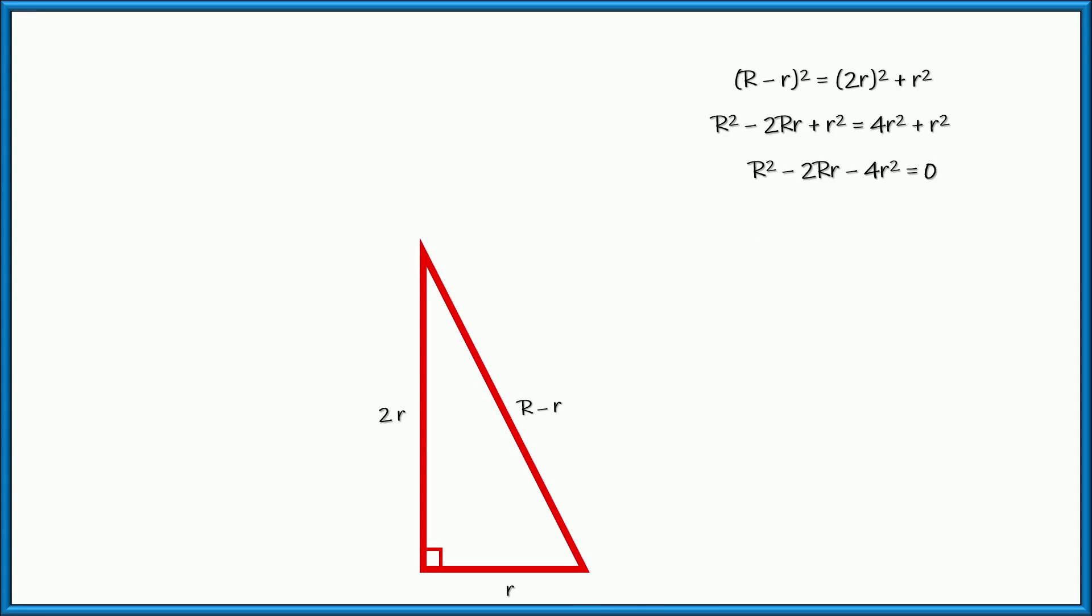Anyway, that's a quadratic equation. It's not factorable. It's in standard form, Ax squared plus Bx plus C, where A is equal to one, B is negative two R, and C is negative four R squared. Do you see it? So we can use the quadratic formula. All right, so let's go ahead and clean up some space right here.